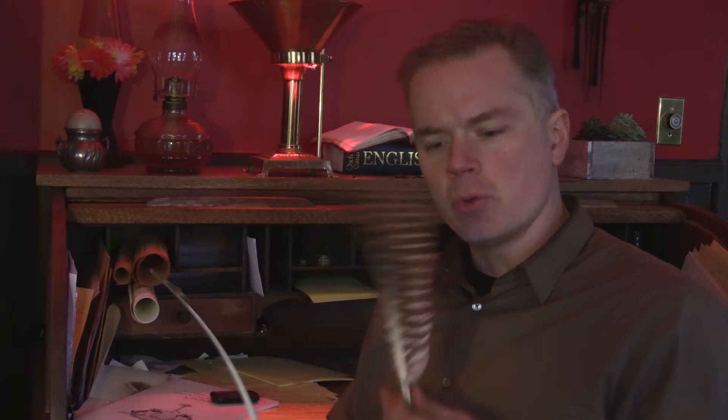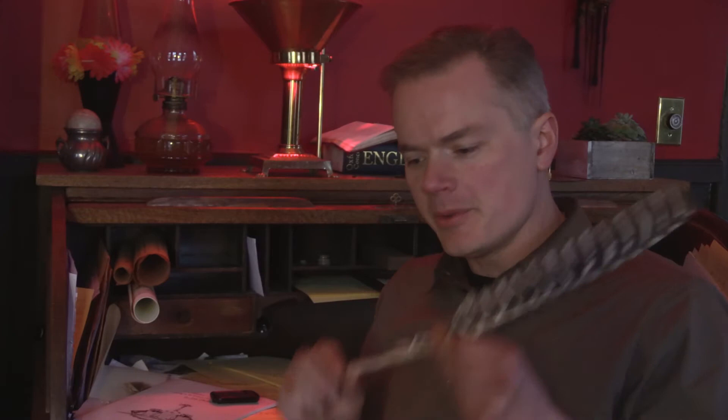To make a quill pen, you need a feather. The quill is the central part of the feather, specifically the hollow part without barbs. The best feathers for quills come from geese, although a turkey feather will work just fine, and there are a lot more turkey hunters now than goose hunters.